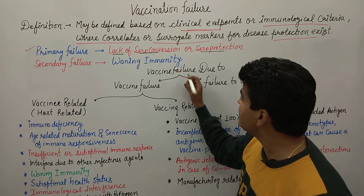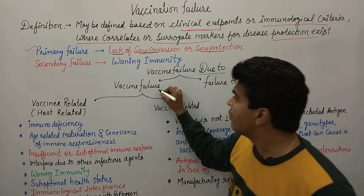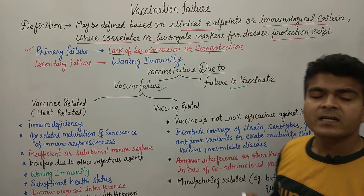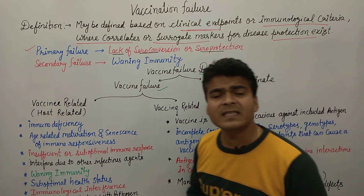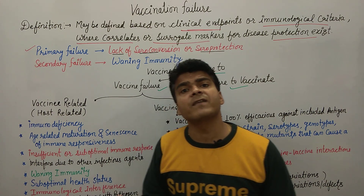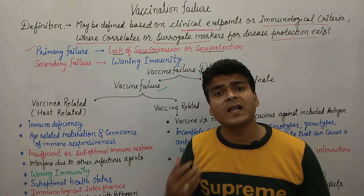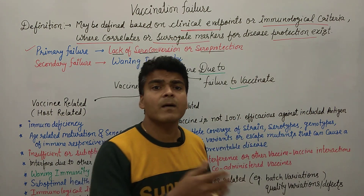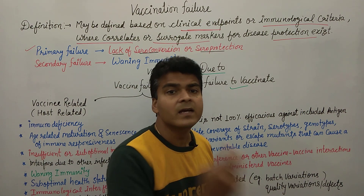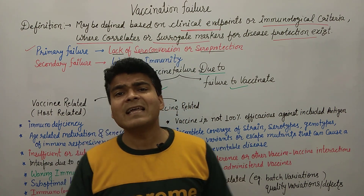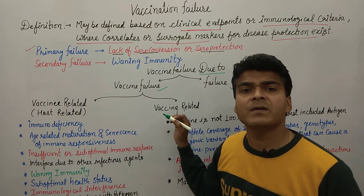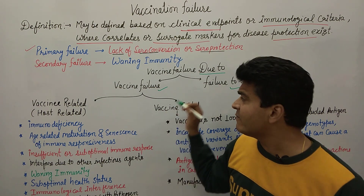Now, what are the reasons behind vaccination failure? Vaccination failure can be due to vaccine failure or failure to vaccinate — two reasons. First, failure due to the vaccine itself. Second, failure to vaccinate — meaning we could not give the vaccine to someone at all. So the first reason is vaccine failure.